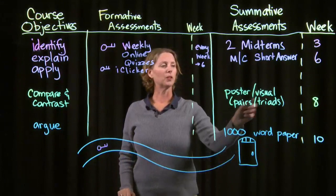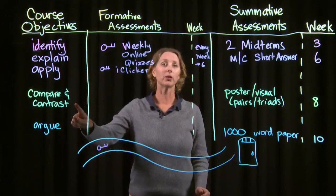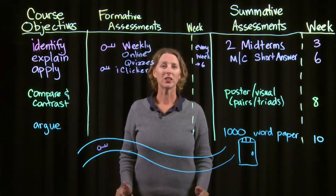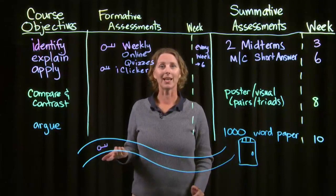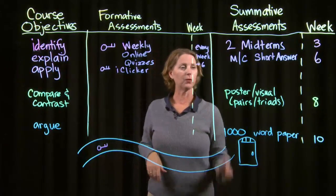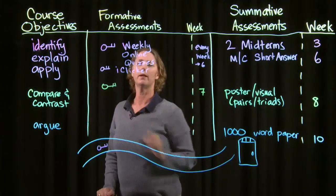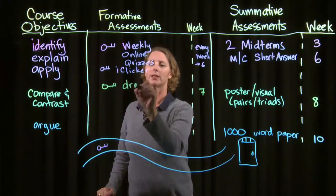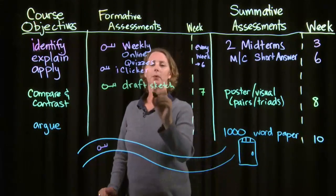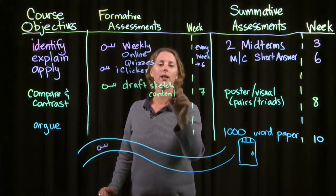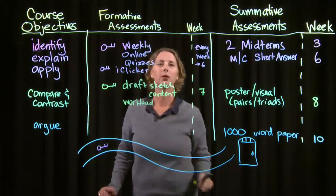For the second assessment — the poster and visual that students will do in pairs and triads — these will compare and contrast different course topics. I want to make sure students have a balanced workload between their paired and triad work and that they're not doing the poster at the last minute. So the formative assessment for this one will be in week seven: they need to turn in a draft sketch of their poster or visual with some draft content, as well as a workload balance sheet showing who is doing what on the project.